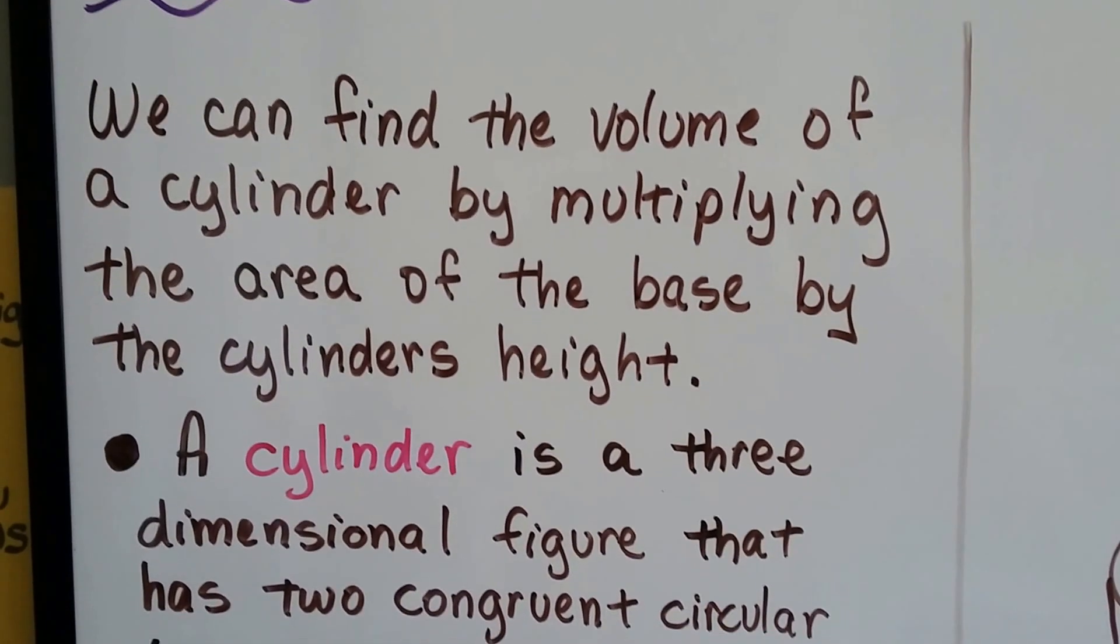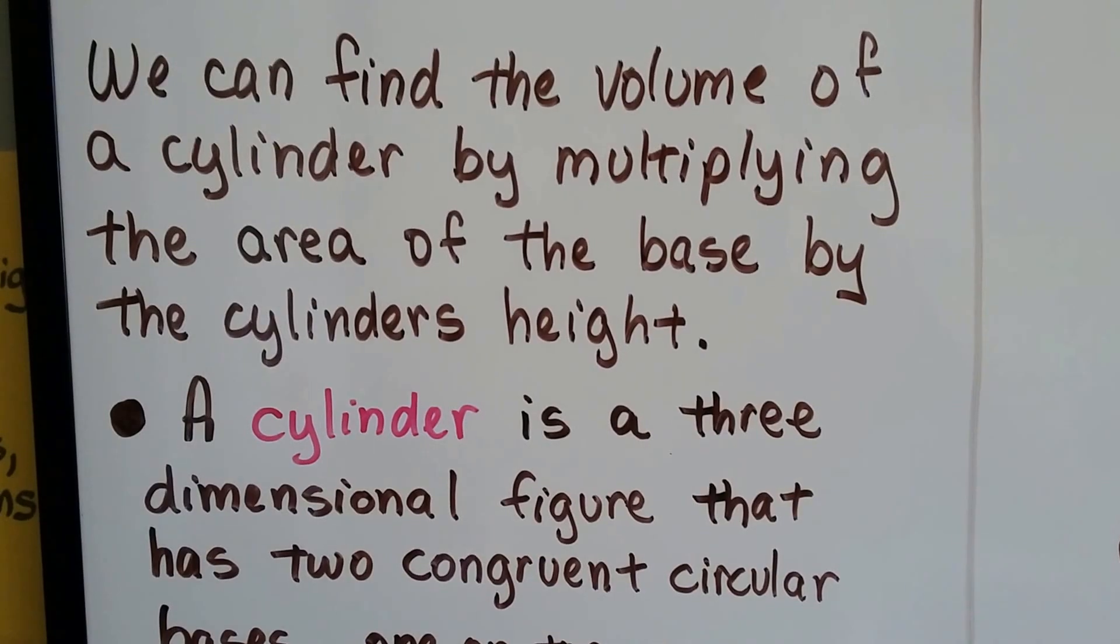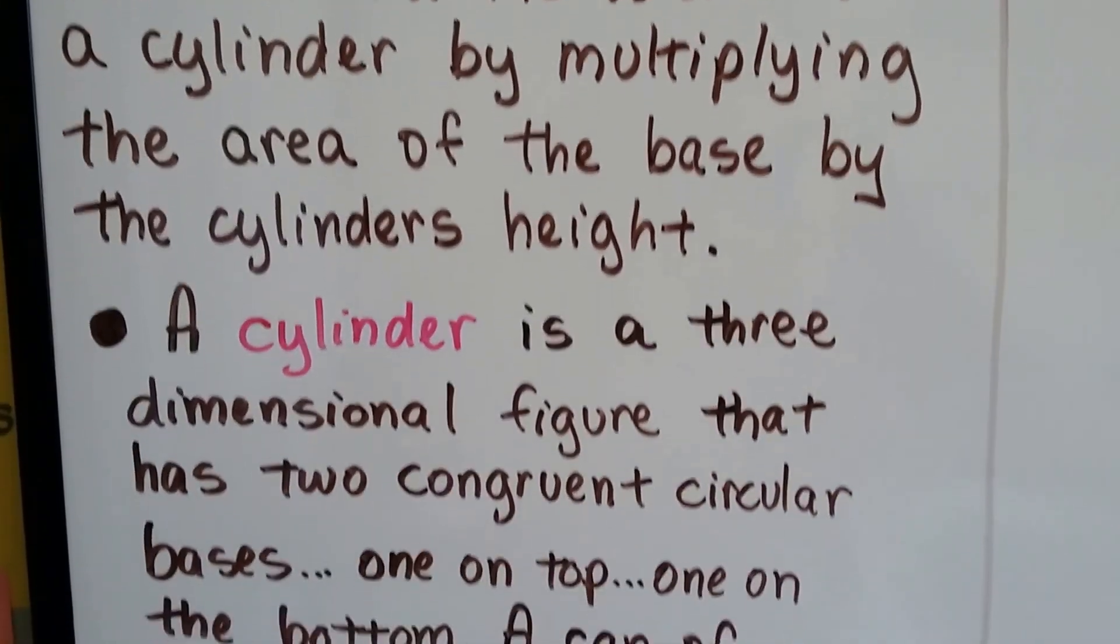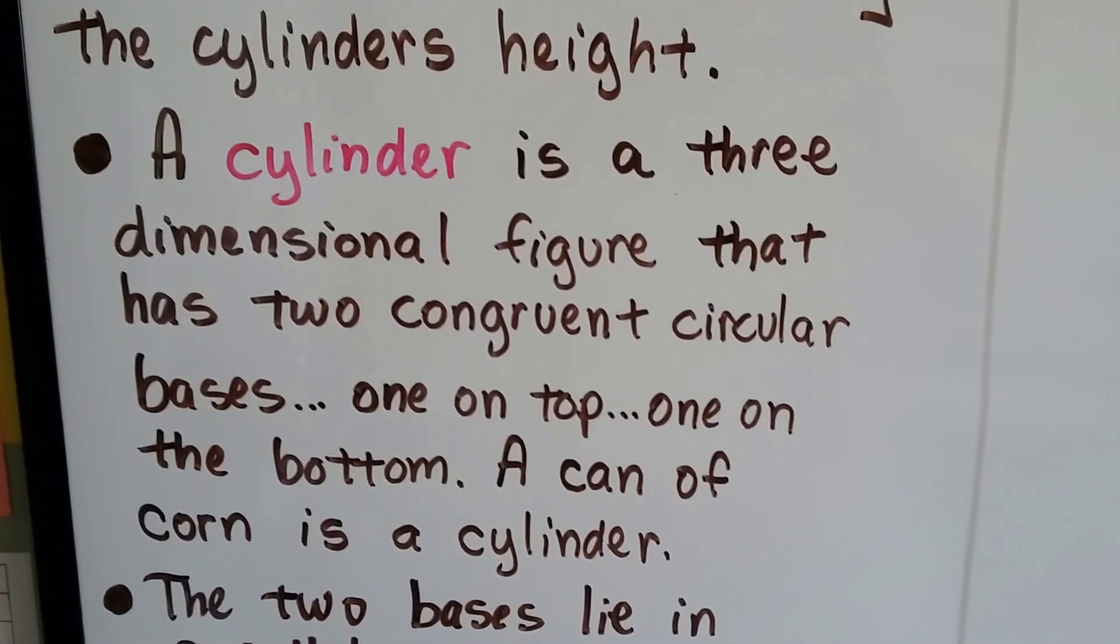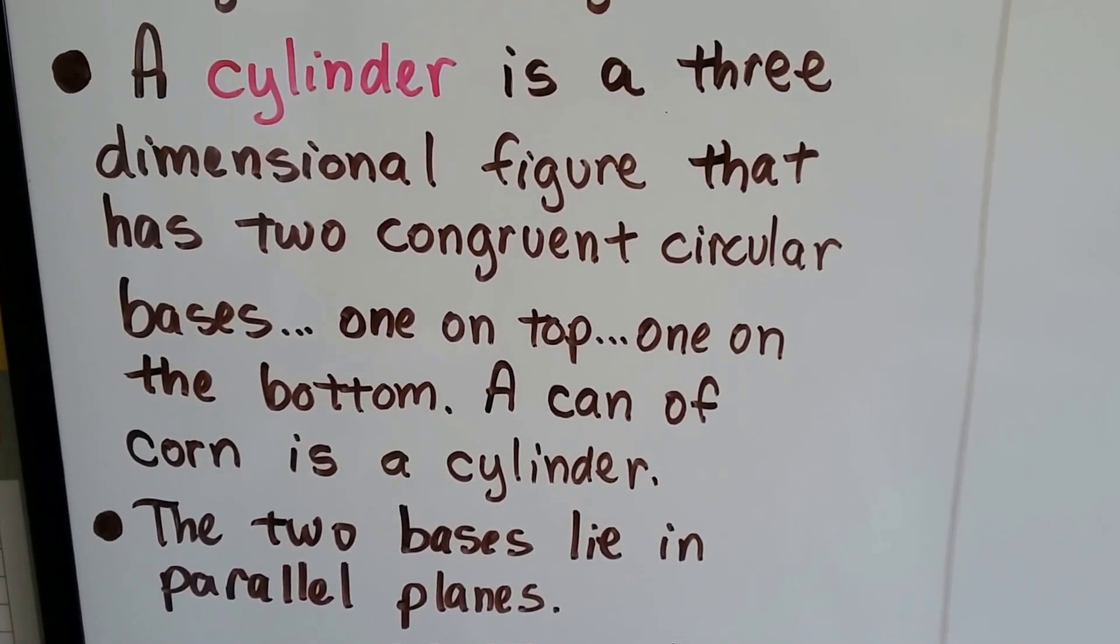We can find the volume of a cylinder by multiplying the area of the base by the cylinder's height. A cylinder is a three-dimensional figure that has two congruent circular bases.